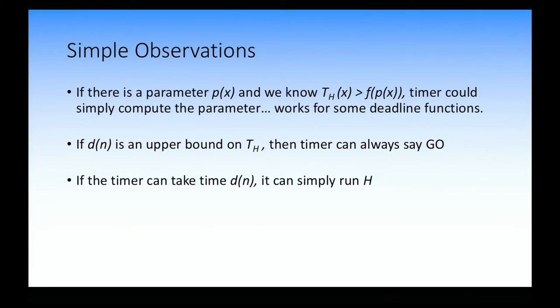Timers in some cases are very easy to define. Sometimes there's a hidden parameter of the input that determines how long the algorithm takes. If you can quickly evaluate this parameter, compute how long it would take, and it's less than the deadline, you can let it run. If it takes more than the deadline, you stop it. If you can somehow prove the heuristic does work within time d(n), you can say 'always go.' The reason we ask the timer not to take more than d(n) time is that if you allow it to take d(n) time, you can just simulate h for d(n) time.